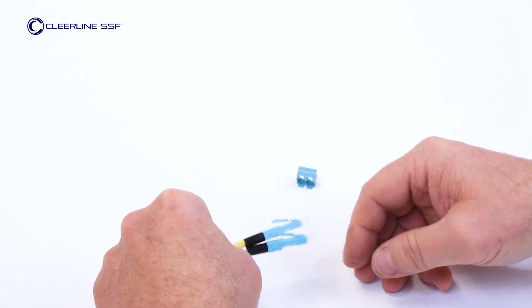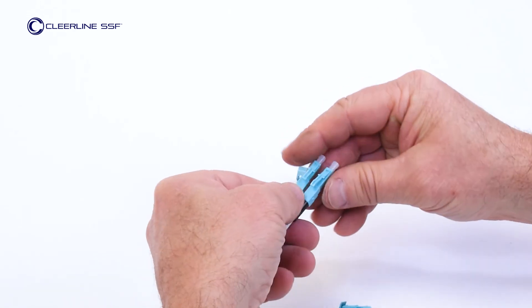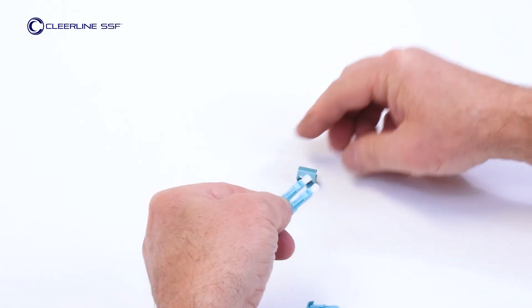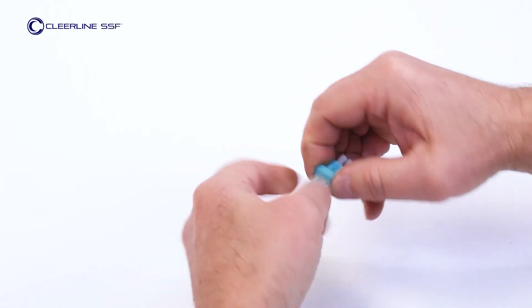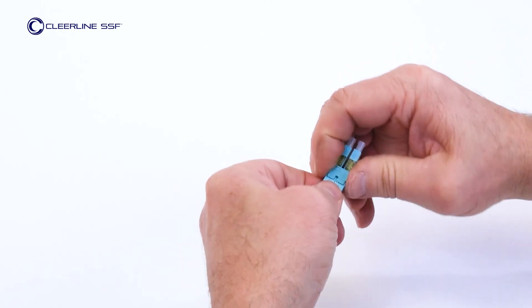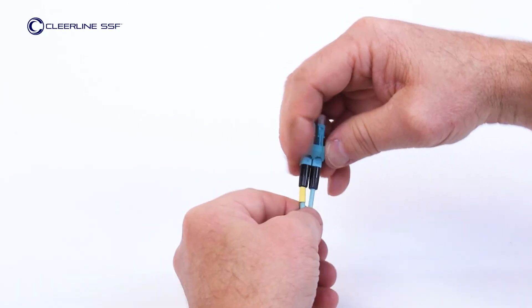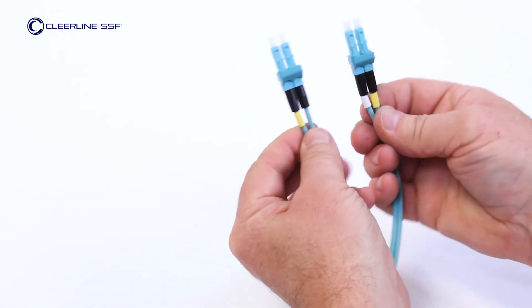It may be necessary to push the connector tabs down slightly while installing. On the other end of the cable, place the yellow indicator in position B. Install clip. This ensures that send connects to receive.